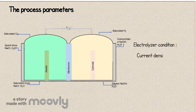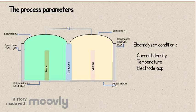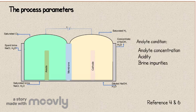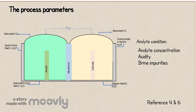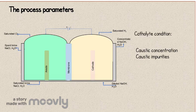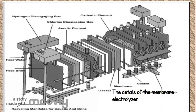The electrolyser conditions include current density, temperature, and electrode gap. The anolite conditions include anolite concentration, acidity, and brine impurities. The catholite conditions include caustic concentration and caustic purity. The main reactor of the chloralkali process is the membrane electrolyser.